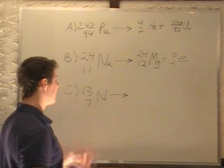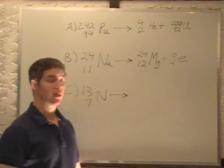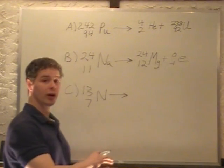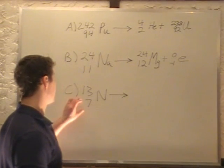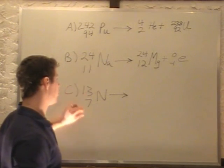Now, the last part, we have nitrogen, that is undergoing beta plus decay. Now beta plus decay happens when a proton transforms to a neutron and a positron. So this time, it's the opposite of this, instead of neutron to proton, we have proton to neutron.